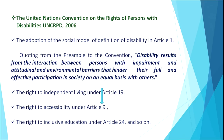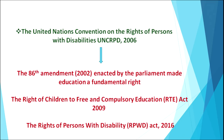Other things included in UNCRPD were the right to independent living under Article 19, the right to accessibility under Article 9, and the right to inclusive education under Article 24. The impact of the UNCRPD in India was that we brought in the 86th Amendment in 2002, enacted by Parliament, which made education a fundamental right. The second important change was the Right to Free and Compulsory Education, popularly called the RTE Act 2009. The third and most important is the Rights of Persons with Disability, i.e. the RPWD Act 2016, which is the revised PWD Act.